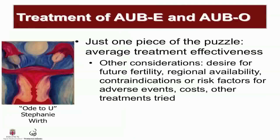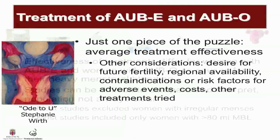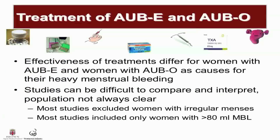For the remainder of this talk, we're going to focus on the treatment of AUB-O and AUB-E. What I will cover in this talk is just one piece of the puzzle: average treatment effectiveness. Other considerations for treatment of abnormal uterine bleeding are the desire for future fertility, regional availability of treatments, contraindications or risk factors for adverse events, costs, and other treatments tried. While hysterectomy is the definitive treatment for AUB, a multitude of alternative, less invasive medical and surgical treatments are available.